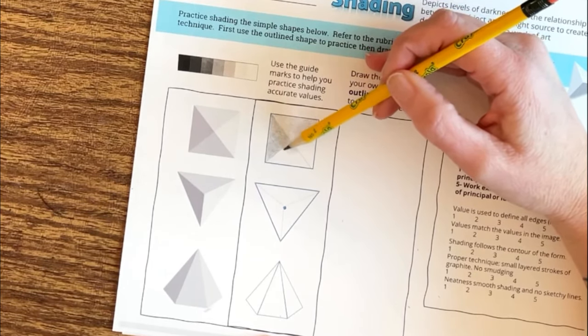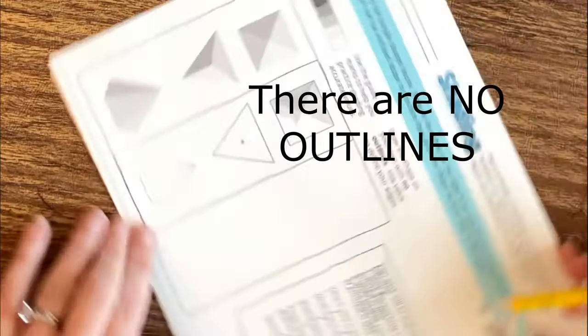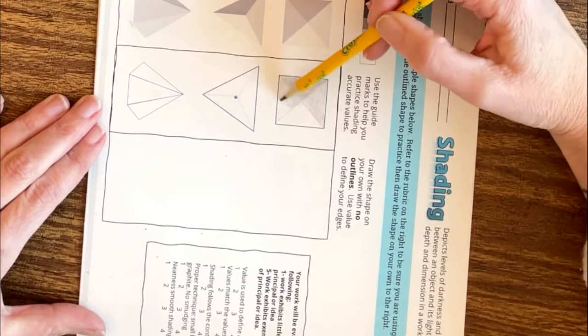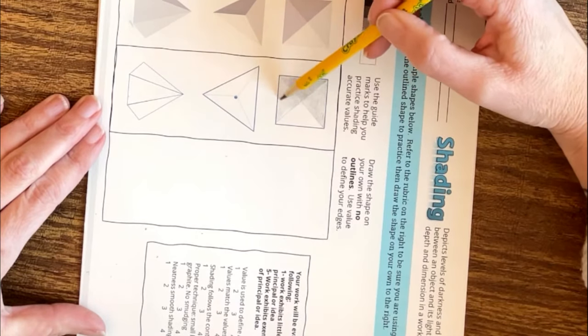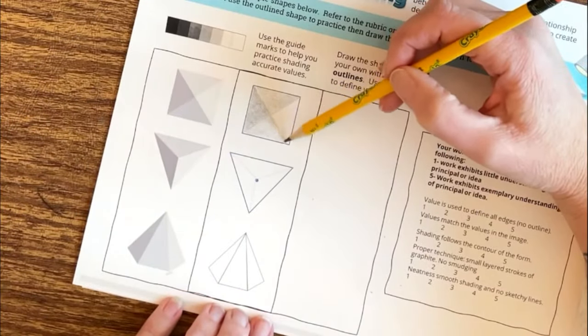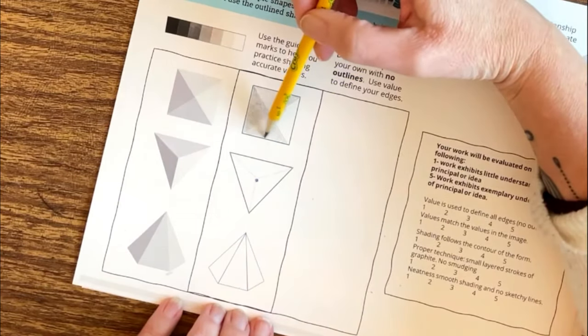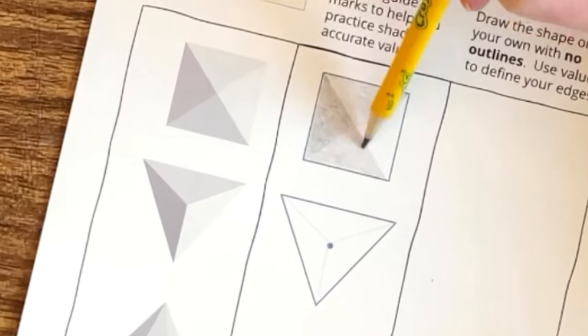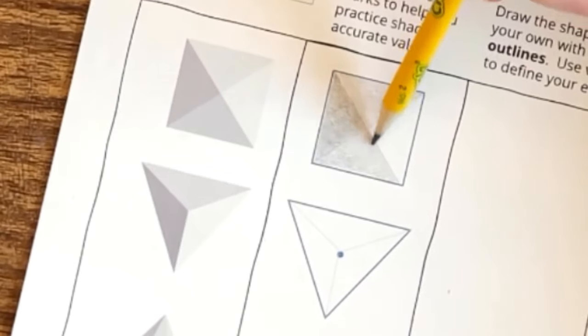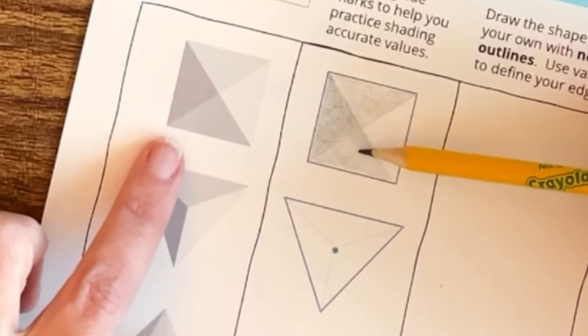Now let's move on to a value that is in between the two that we just created. The one on the bottom here is a little bit lighter than the one to the left but a little bit darker than the one at the top. Notice how I spun my page around a little bit here? That can really help you get into the tooth of the paper and change your direction a little bit so you can get much smoother shading. I'm building up my values very slowly.